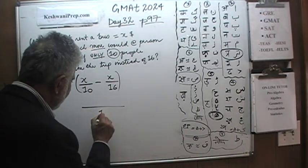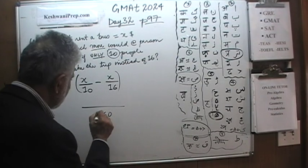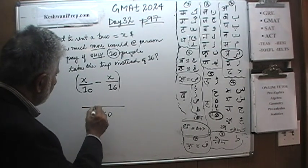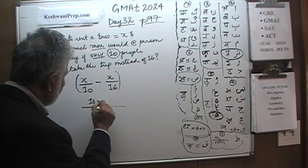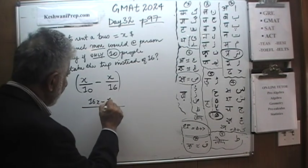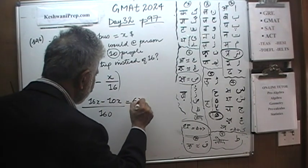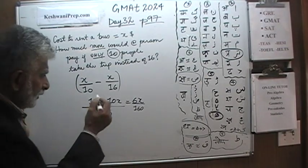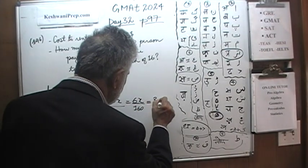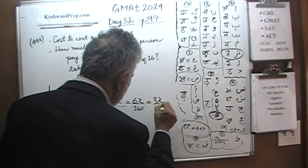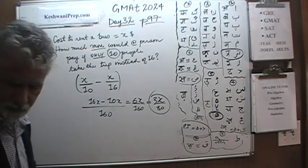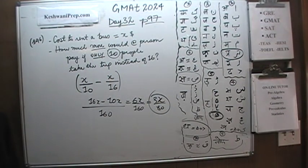We take a common denominator of 160. That is going to give us 16x minus 10x, which is very straightforward. That is 6x over 160. We just have to reduce it — divide top and bottom by 2 — and we get 3x over 80. That is it. That is our answer. Straightforward simple problem.